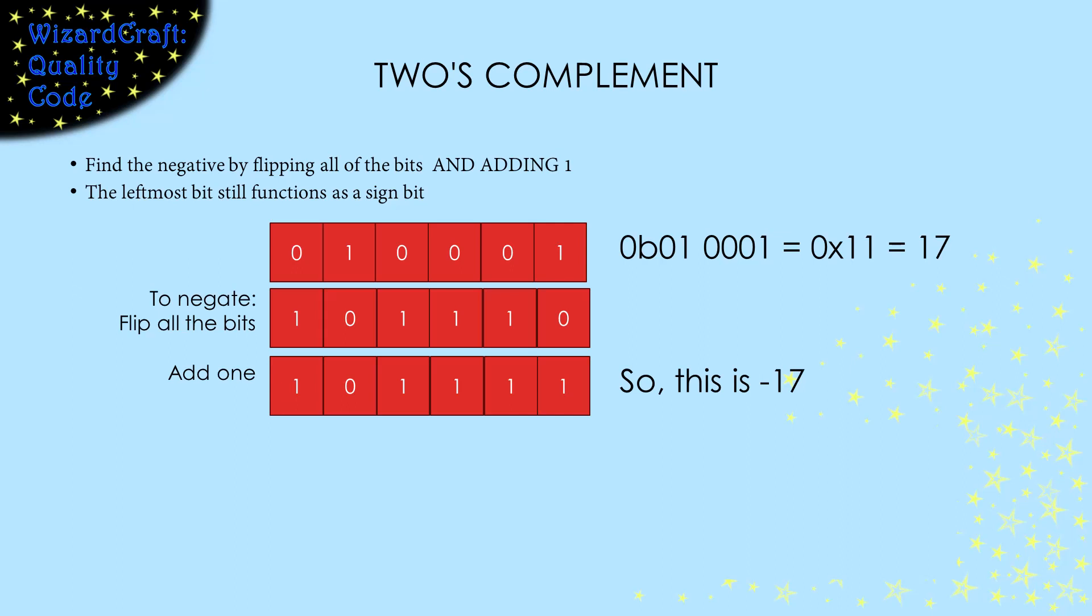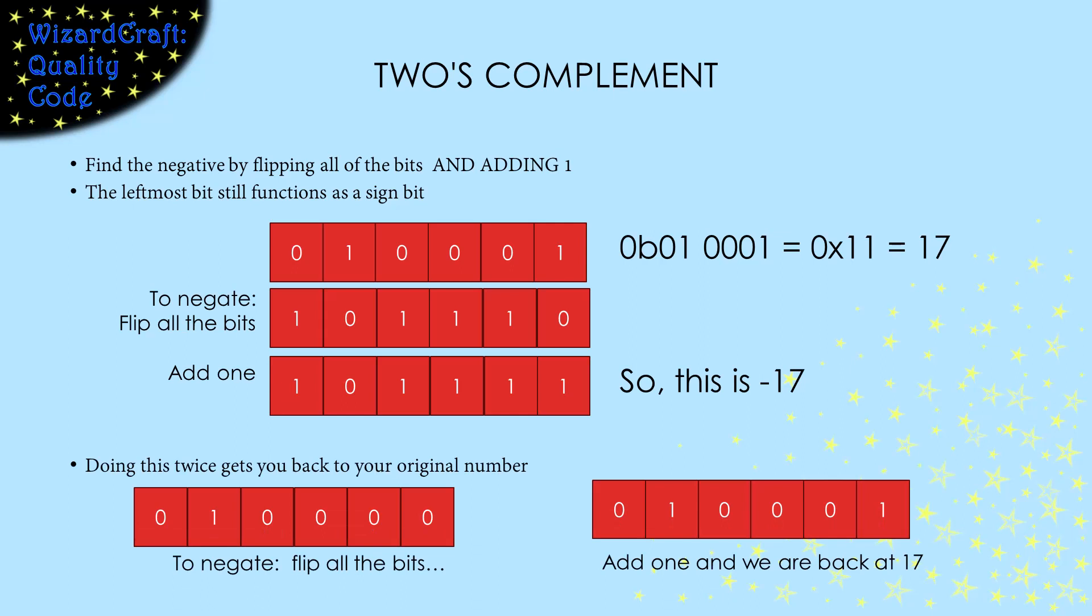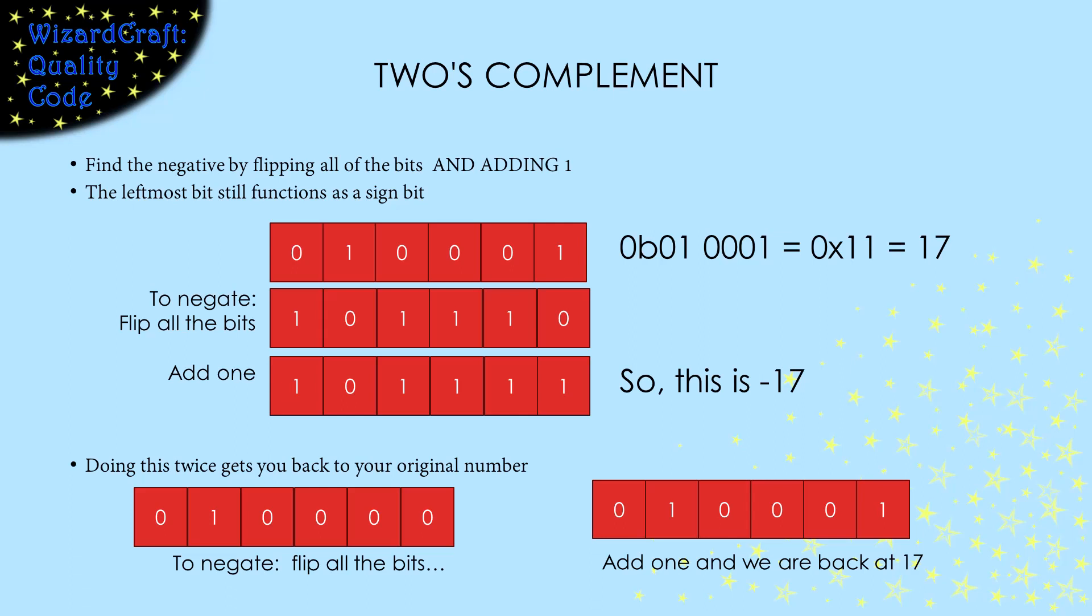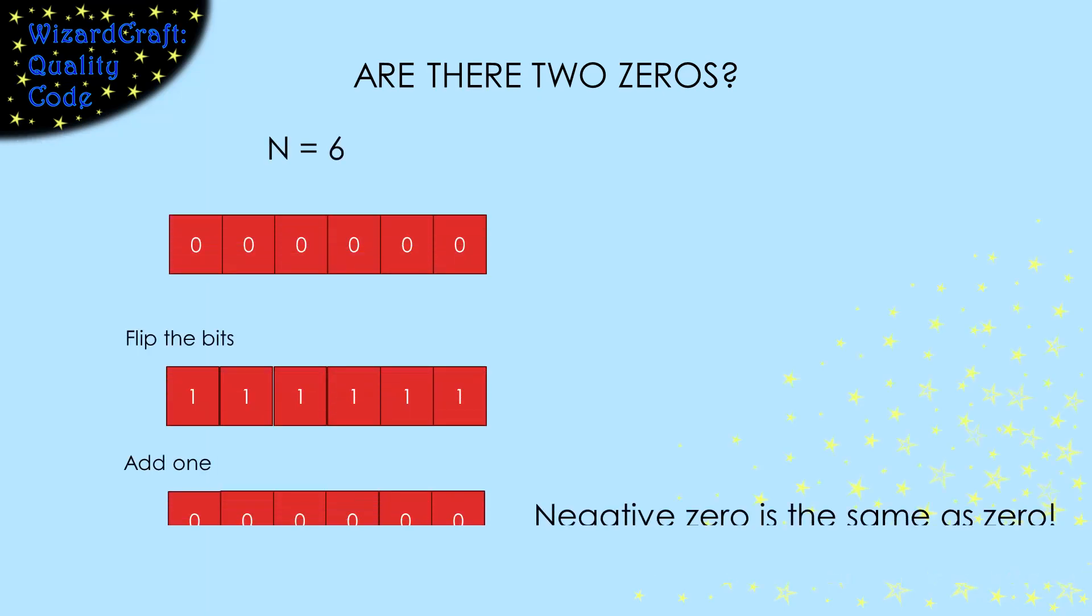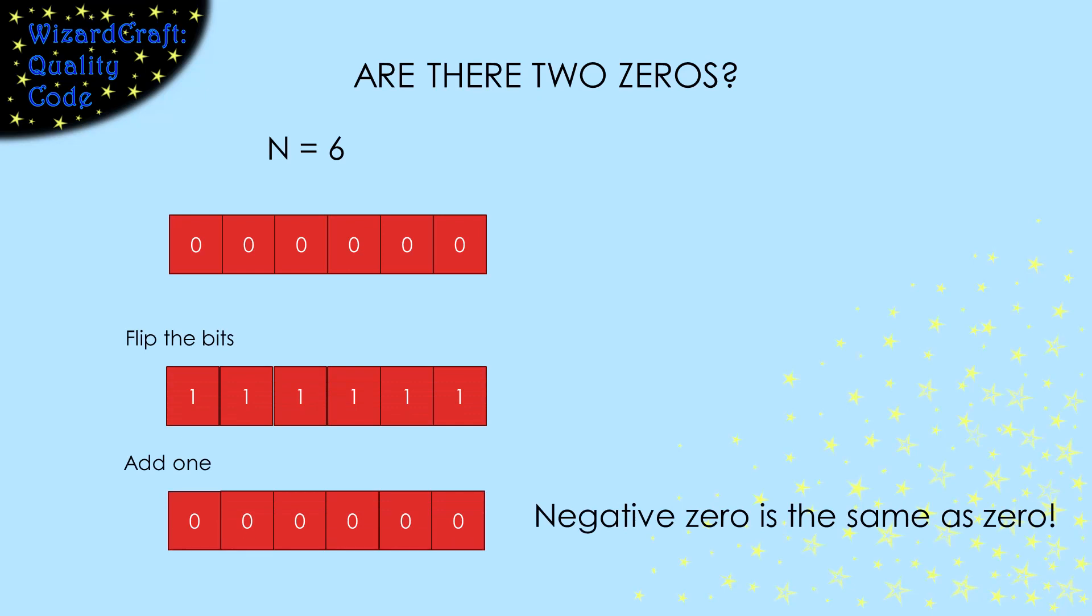It's important that negating a number twice gets us back to the number we started with. Yes, this is true for signed magnitude and for one's complement. But, is it true for two's complement? While it isn't initially obvious, two's complementing a number twice does get us back to the original number. Before we go any further, one problem that both of the other options had was that they had 2 representations of 0. Is that true for two's complement? Let's test by negating 0. Flip the bits, add 1, and we're back at 0. Negative 0 and positive 0 are the same. So, we don't have 2 representations of 0.